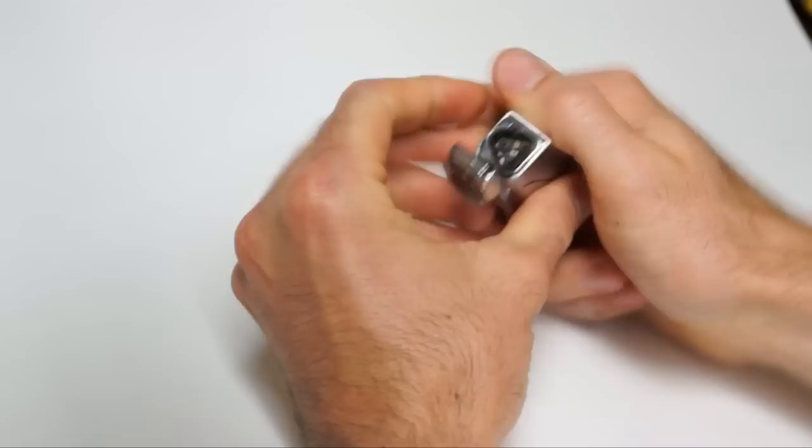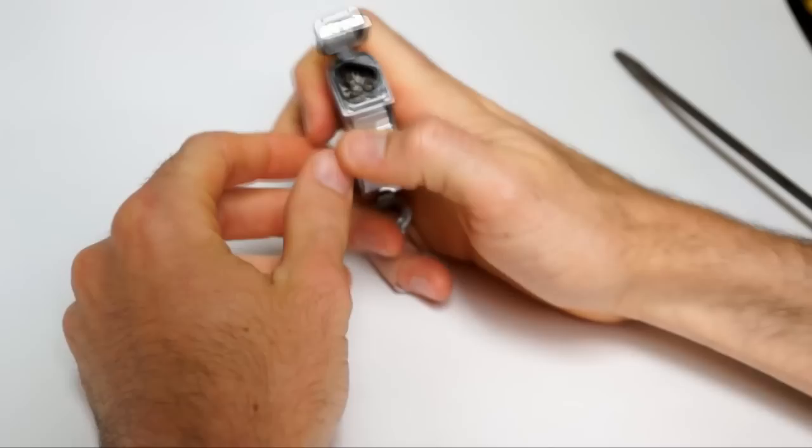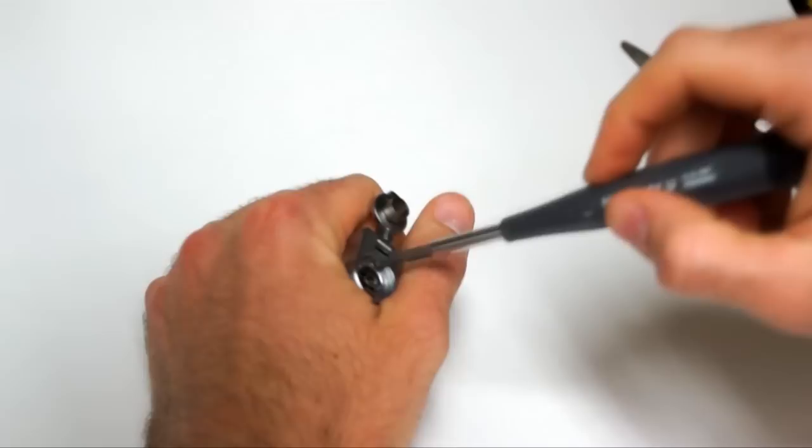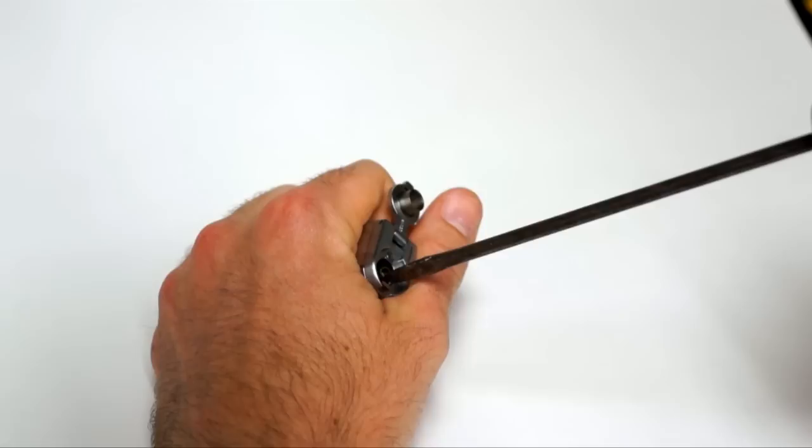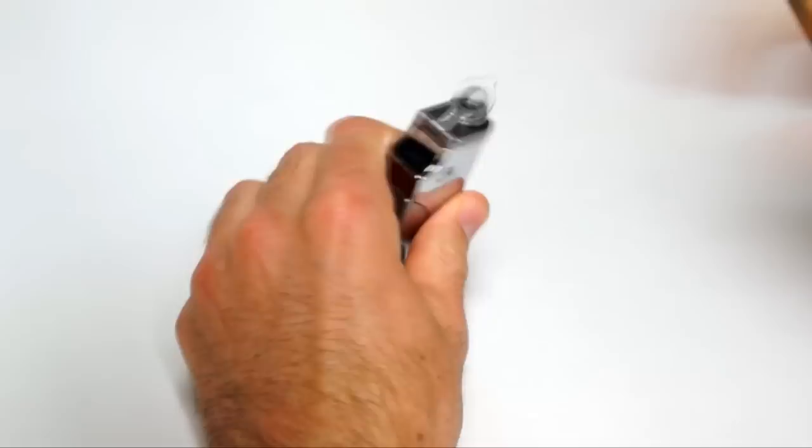But there's no butane coming out of it. First I'll try just turning up the butane. That's all the way turned up. Still no butane coming out of it. So what we'll do from here is take this apart. First test to see if the pin is stuck. Turn it all the way down, turn it all the way back up.